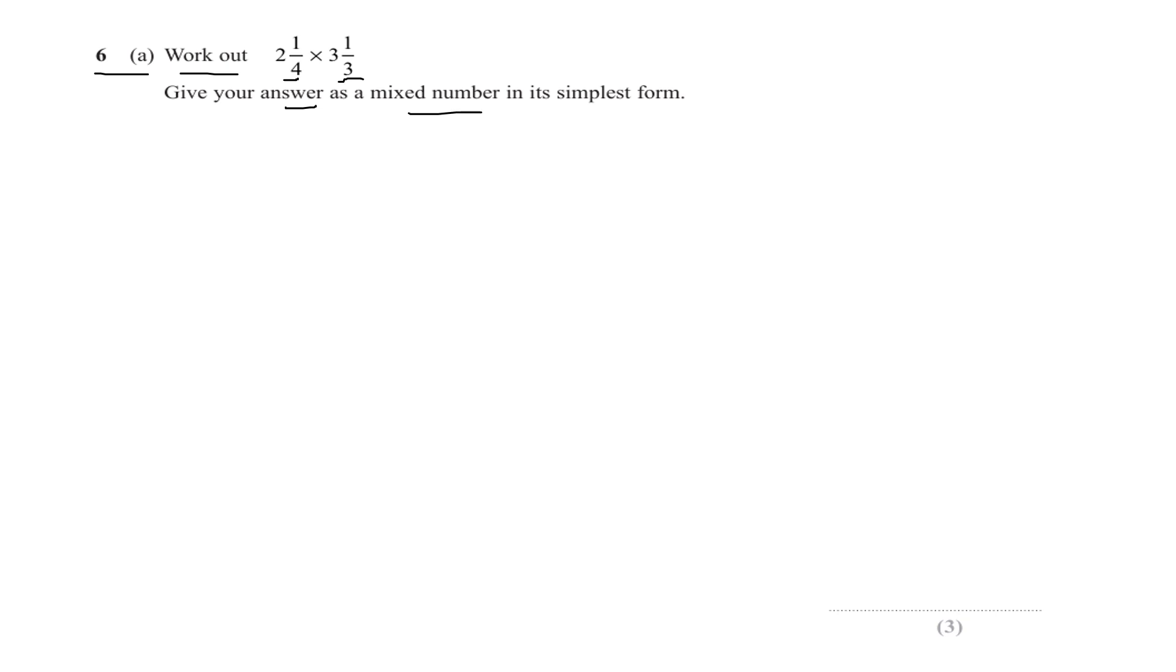Step one: we will convert them both to improper fractions or top-heavy fractions. So two and a quarter—two wholes is eight quarters, eight quarters plus one quarter is nine quarters. Again, if you're unsure, I do four times two is eight, plus that one makes nine.